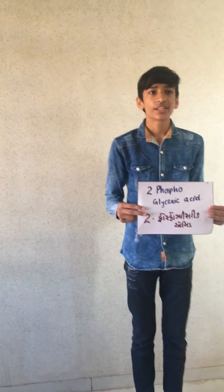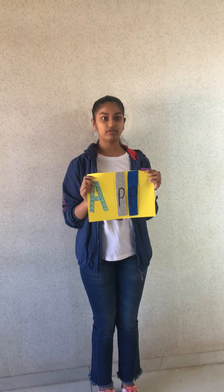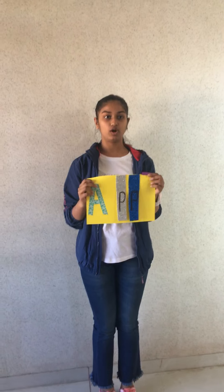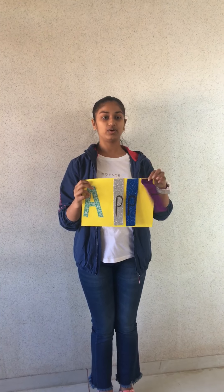I am 2-phosphoglyceric acid. I am phosphoenolpyruvic acid and my dephosphorylation occurs. I am ADP, adenosine diphosphate. My phosphorylation occurs and I receive 1 phosphate from phosphoenolpyruvic acid and I am converted into ATP, adenosine triphosphate.